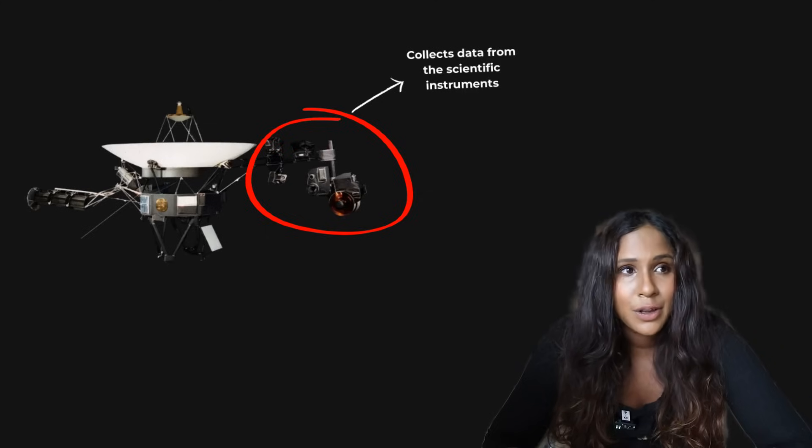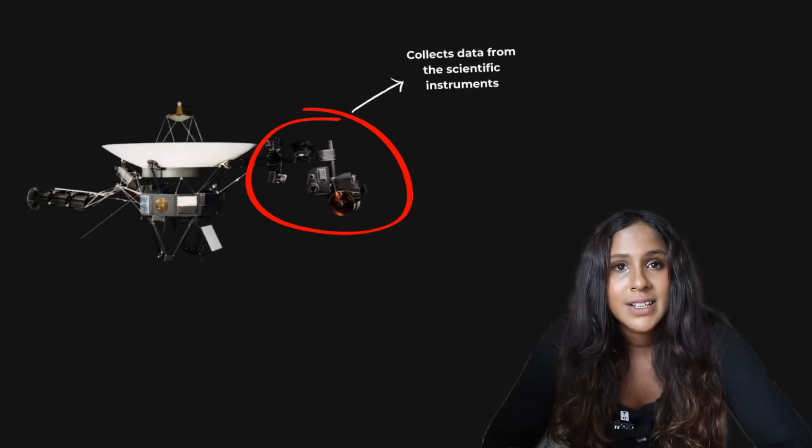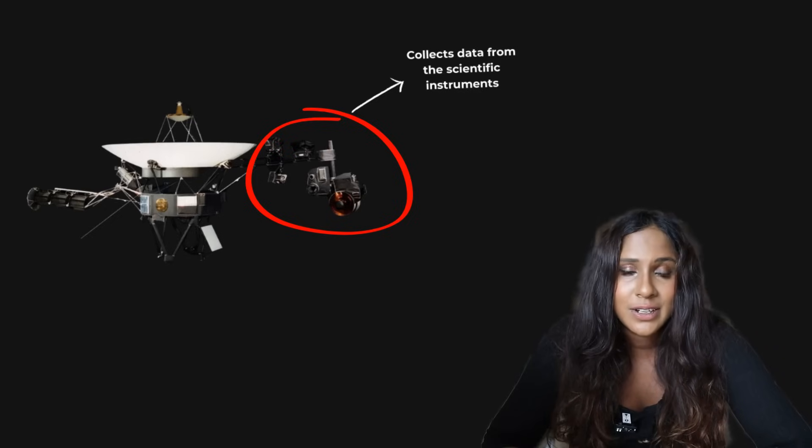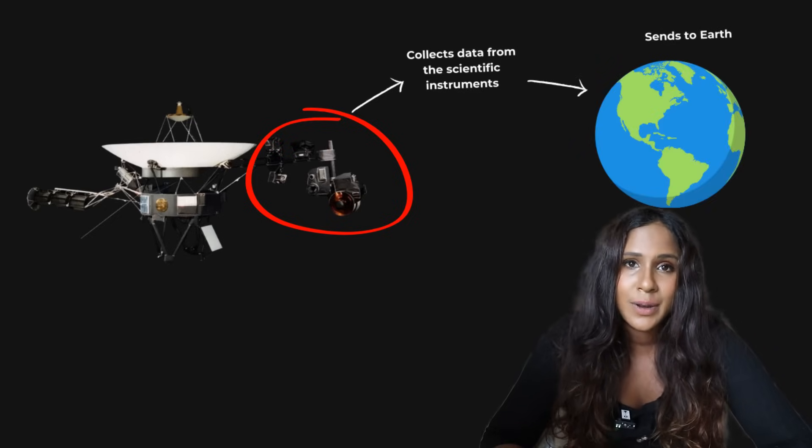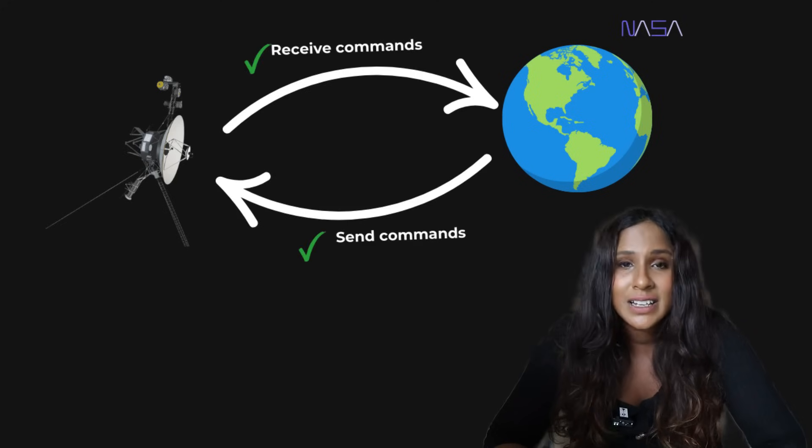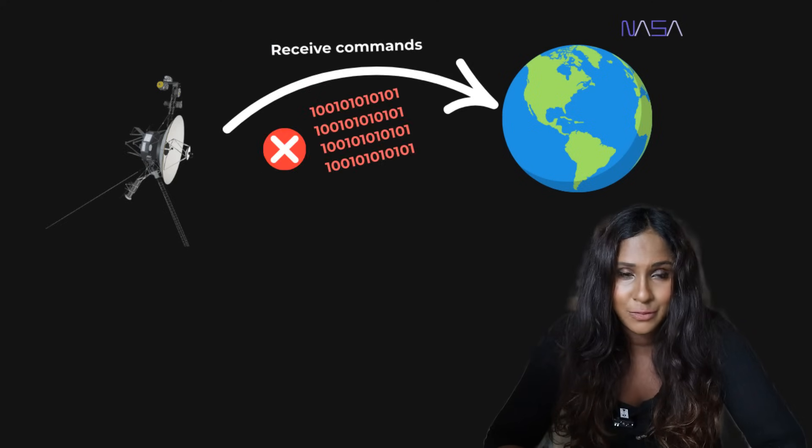And remember, the system is responsible for collecting the scientific data from the instruments onboard Voyager 1. It also gathers information about the spacecraft's health and it packages all this information and sends it back to Earth. The interesting part is that Voyager 1 wasn't completely dead. NASA could still send commands to it. And NASA was receiving commands just fine. Was just not really making sense.